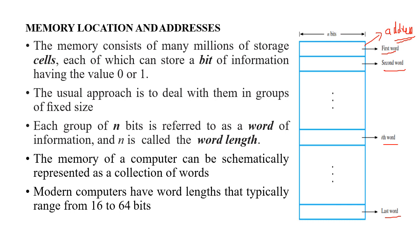Most modern computers have a word length typically in the range of 16 to 64 bits. We need to identify each word with a distinct name — that is, an address. If there are 16 address locations, we need to generate 16 distinct addresses in binary, so it becomes 2 to the power 4, where 4 is the number of address lines.